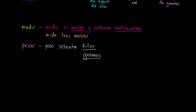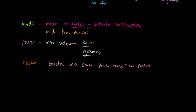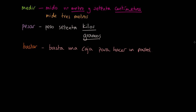We also have another interesting verb: bastar — to be enough. So I could say, for example, basta una caja para hacer un pastel — one box is enough to make a cake. So bastar means to be enough.